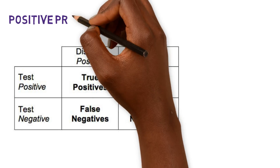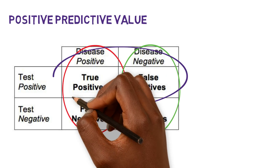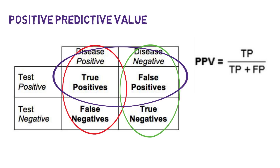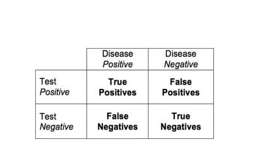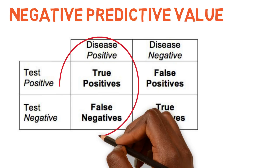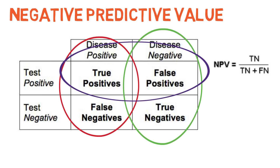For positive predictive value, you take the true positive divided by true positive plus false positive. And then for negative predictive value, true negative divided by true negative plus false negative.